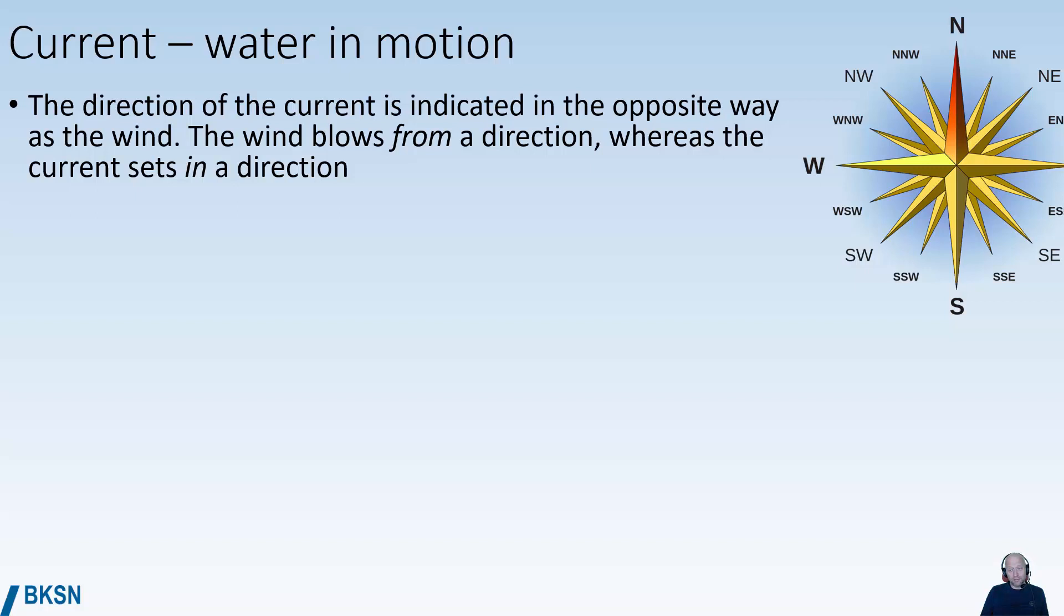A northerly wind means that the wind comes from the north, whereas a northerly current means that the water is moving towards the north. This is just something you need to remember.